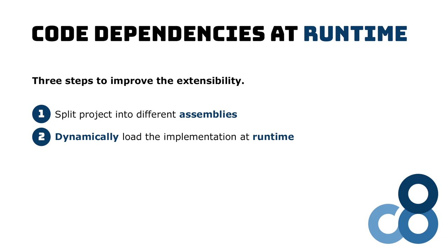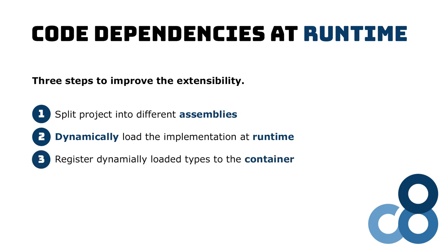Step 2: we load the implementation dynamically at runtime using reflection. We don't know at compile time which implementation we want to use, therefore we need another solution for how we load the implementation when our program starts. Step 3: we register our dynamically loaded implementation to the Autofac container. Once we have an implementation at hand, we need to register it to the Autofac container. This step remains the same as we set it up in the previous video. If everything works out, all we need to do to exchange our implementation is to swap a file in the application folder. Now let's get our hands dirty and refactor this simple application.